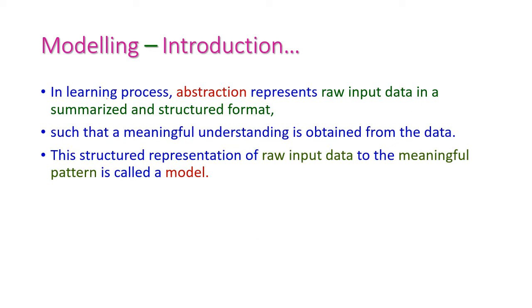In machine learning process, the abstraction is representing the raw input data in a summarized and structured format. The raw input will be converted into structured or summarized format is called as abstraction. That is, the meaningful understanding is obtained from input data is called as abstraction. And this structured representation of raw input data to the meaningful pattern is called a model.